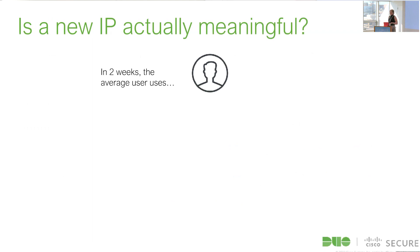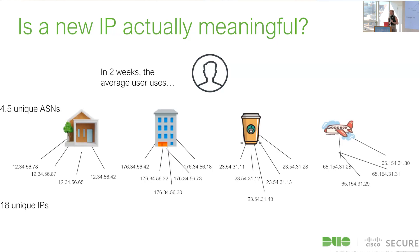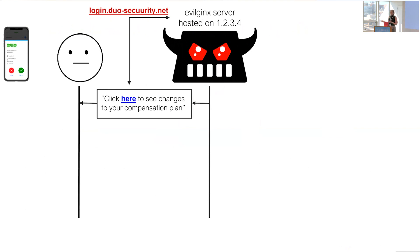Is a changing IP address actually meaningful? How many IP addresses does a user use in just two weeks? The answer is about 18 IP addresses and roughly four-and-a-half different ASNs — your network carrier. This has increased as we've gone more hybrid. So a user's IP address changing isn't really meaningful on its own, except when we consider how this attack has to be set up.